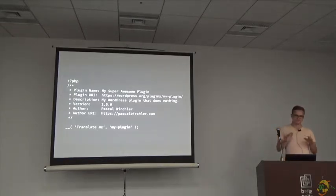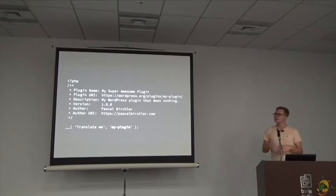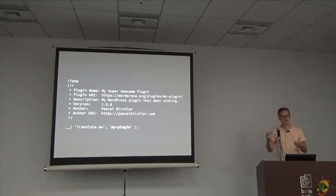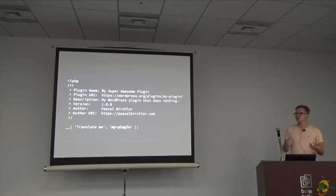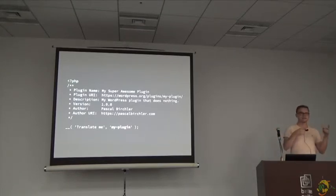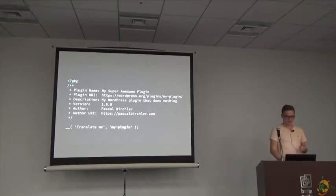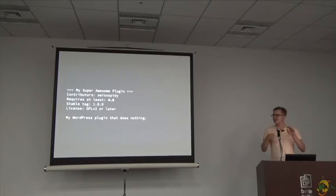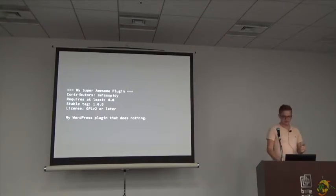Here's a simplified version of that plugin file. It consists of metadata like the name, version, description, and URL. At the bottom, I have a single translation function — one of the gettext functions WordPress provides. The first argument is the text we want to translate, and the second argument is the text domain of the plugin. Here the text domain is 'my-plugin'. For WordPress.org, this needs to match the folder name. The readme specifies that this plugin requires at least WordPress 4.6, which is the version where changes were made to make things easier for language packs.